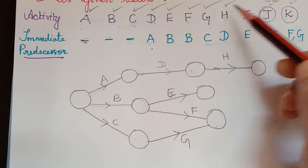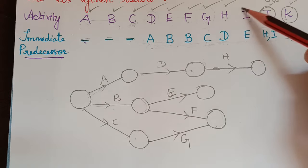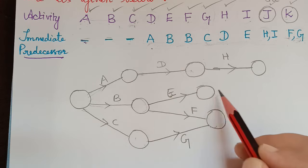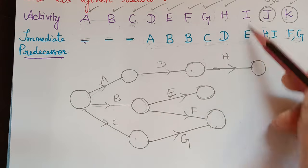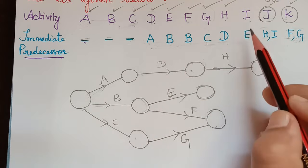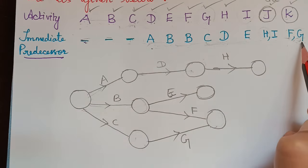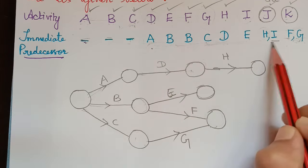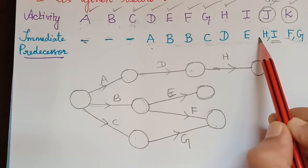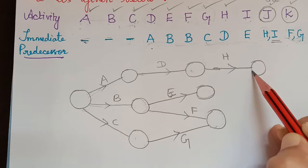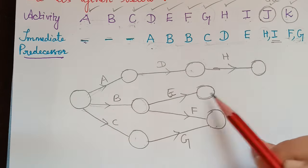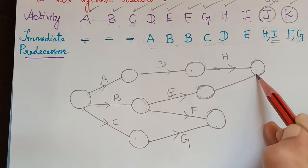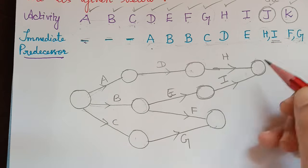Activity I is preceded by E, so E's end node is the starting node for I. We check whether I has appeared in the list alongside a completed activity. I appears alongside H, which is already drawn. So the ending node of I will be the same as the ending node of H. Therefore I starts from E's node and ends at H's end node.